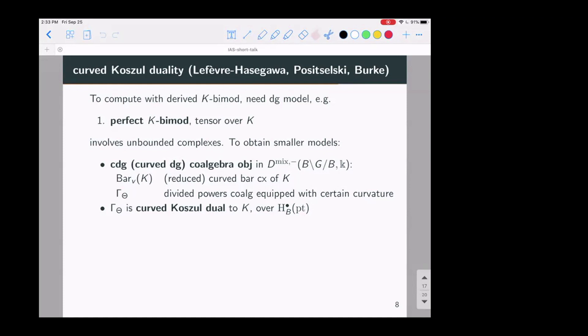So I don't want to go into this too much, but this is a form of Koszul duality. That's especially in the form in papers of Lefebvre-Hasegawa and Positselski and Morrison-Walker-Burke. And in this language instead of talking about a resolution, you should talk about some co-algebra object that is Koszul dual to the algebra object.